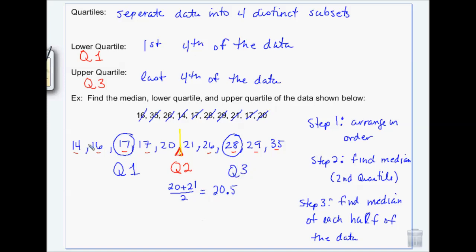And then you can see I've got one, two, three, four sections. So it's only three quartiles, but they separate into four sections.